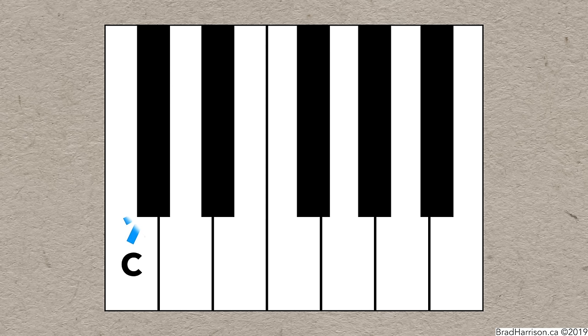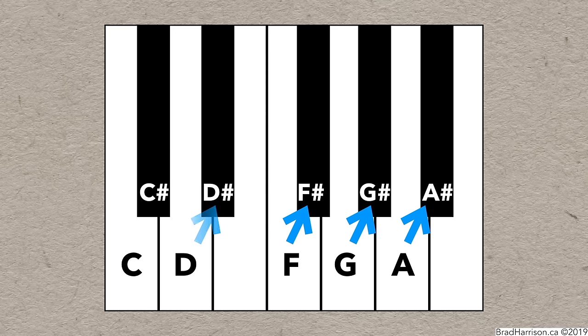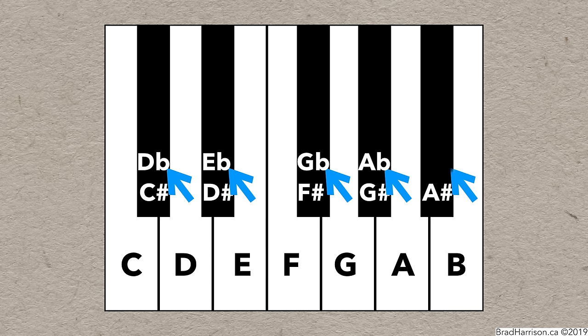So this note is C, and if we go up a semitone, we get C sharp. Up a semitone from D is D sharp. This is F and F sharp, G and G sharp, and A and A sharp. For flats, this is D, and down a semitone is D flat. This is E, and this is E flat. This is G and G flat, A and A flat, and B and B flat.